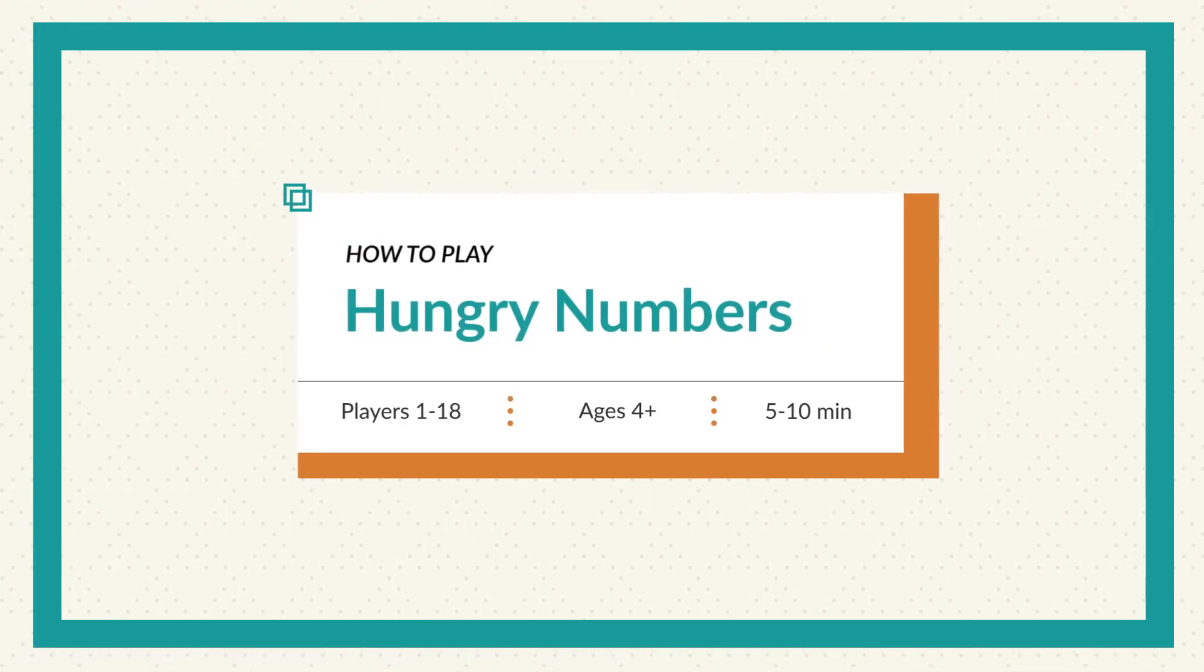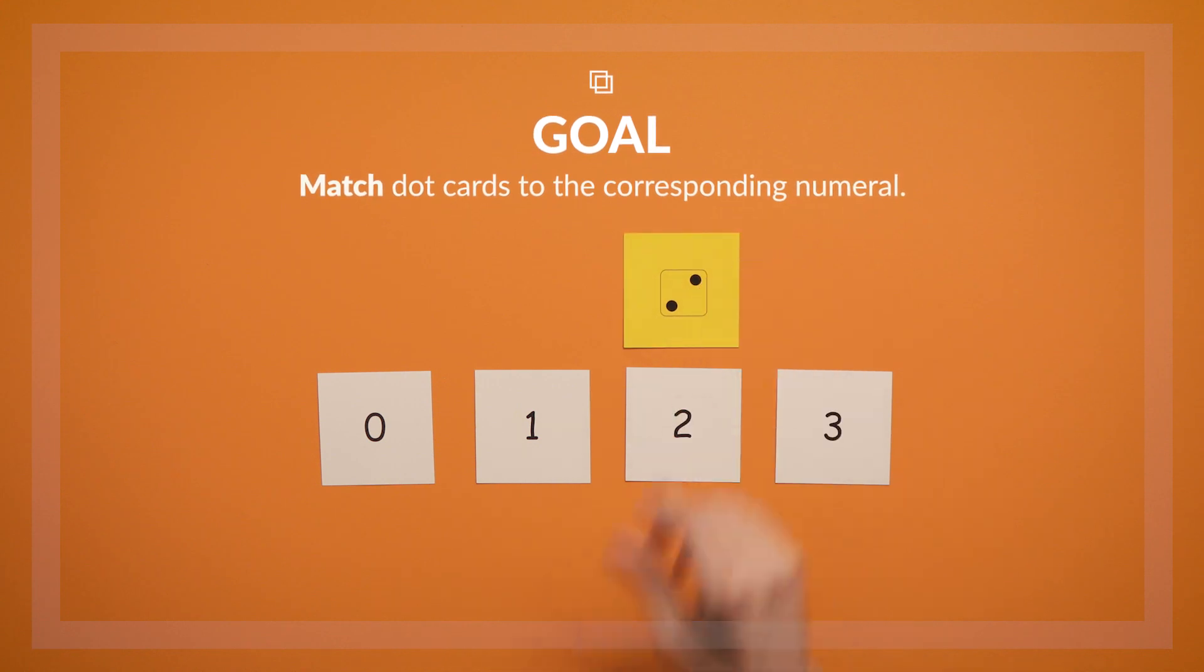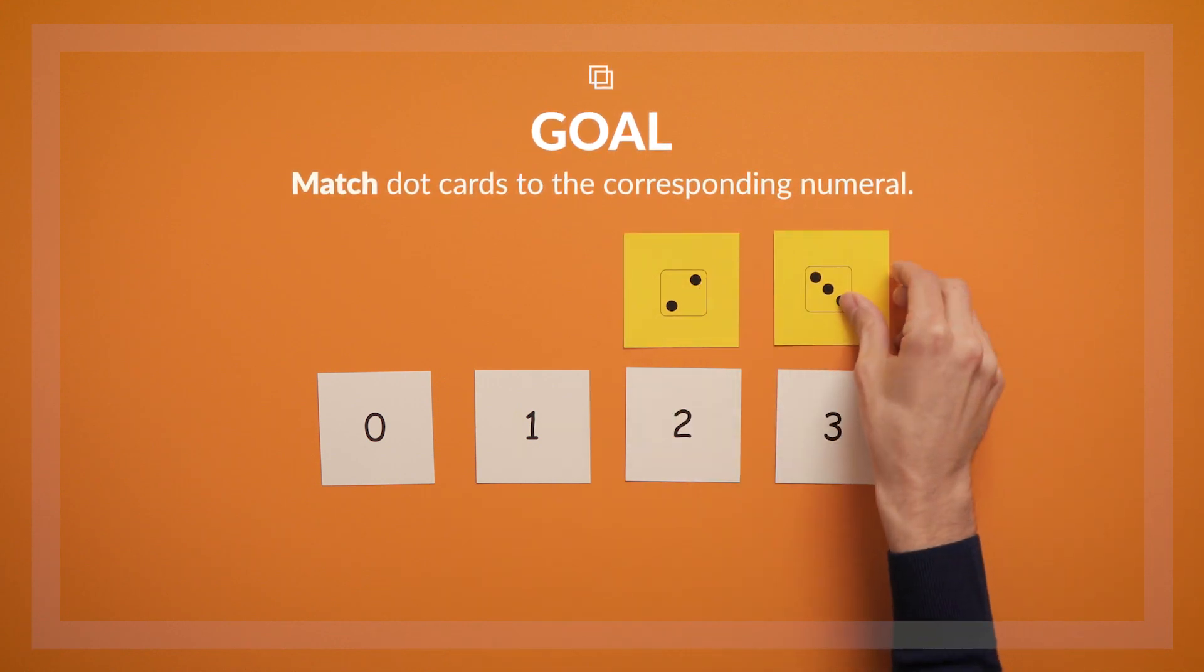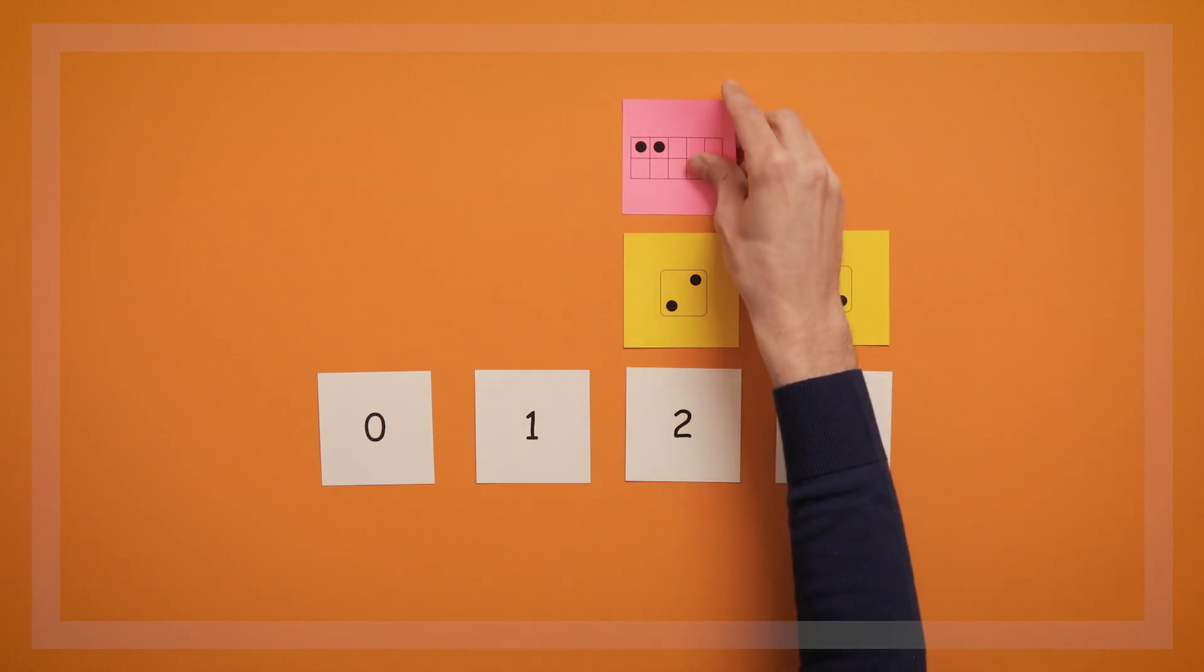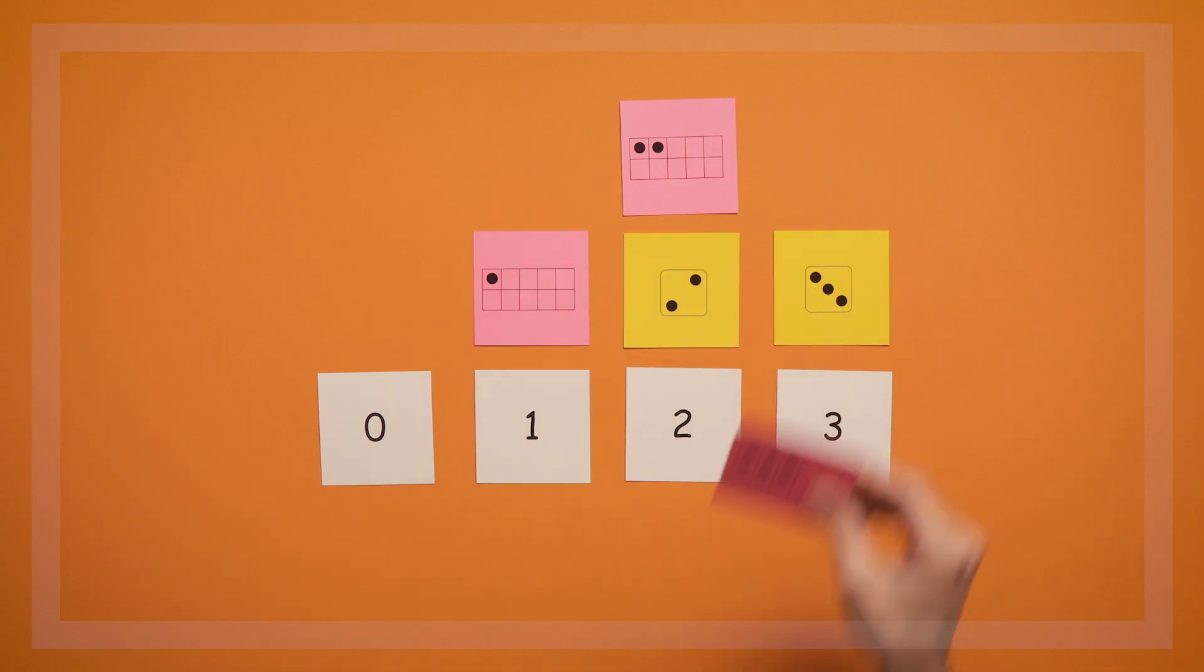This is the game Hungry Numbers. In this game, you set up a row of numeral cards and then match different dot cards to their corresponding numeral card. This is a really fun game that helps kids recognize how written numerals connect to quantities, in this case quantities of dots.